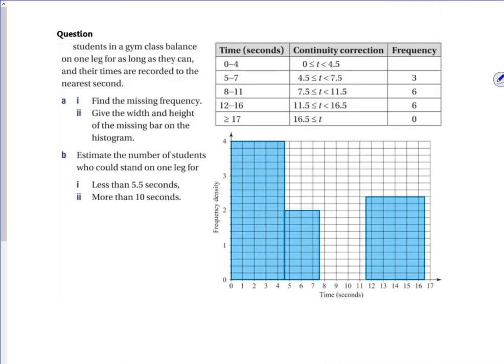So there's a question here, so let's try and get this working for us then. So it says, students in a gym class balance on one leg for as long as they can, and the times are recorded in seconds. So you can see, look, this is, it's like continuity here between the 4 and the 5, that we've rounded up to 4.5, and the same with that one, between the 7 and the 8, that we've rounded up to 7.5.